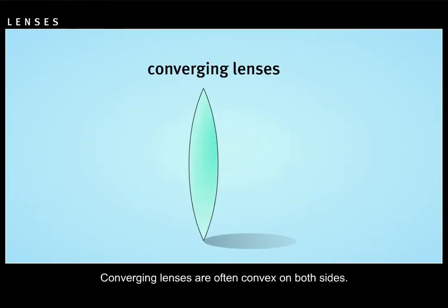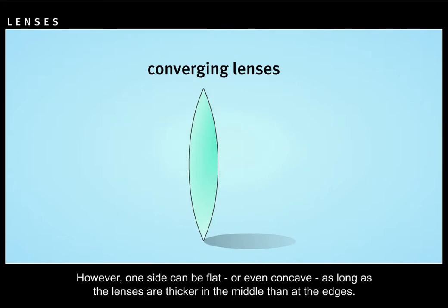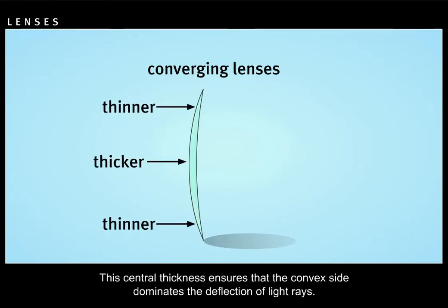Converging lenses are often convex on both sides. That is, they curve outward on both sides. However, one side can be flat or even concave as long as the lenses are thicker in the middle than at the edges. This thickness ensures that the convex side dominates the deflection of light rays.